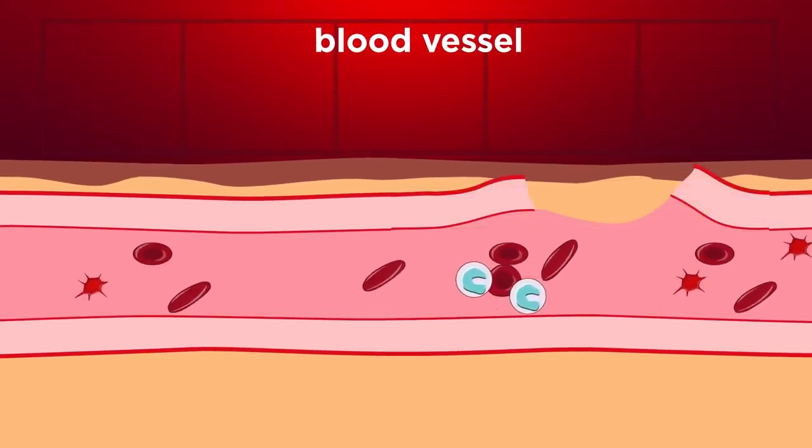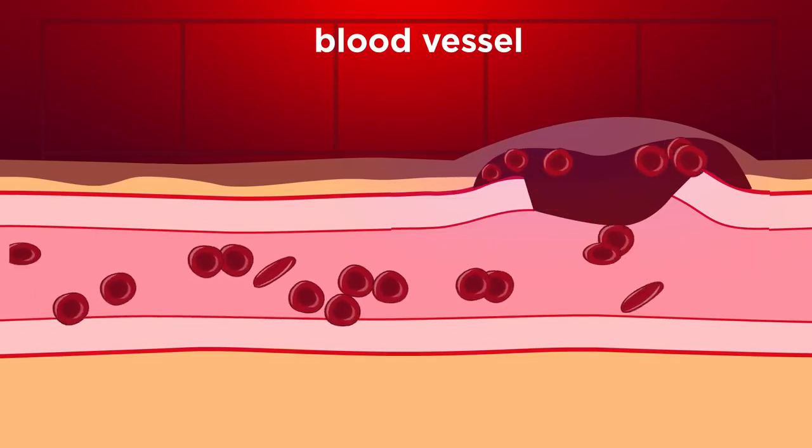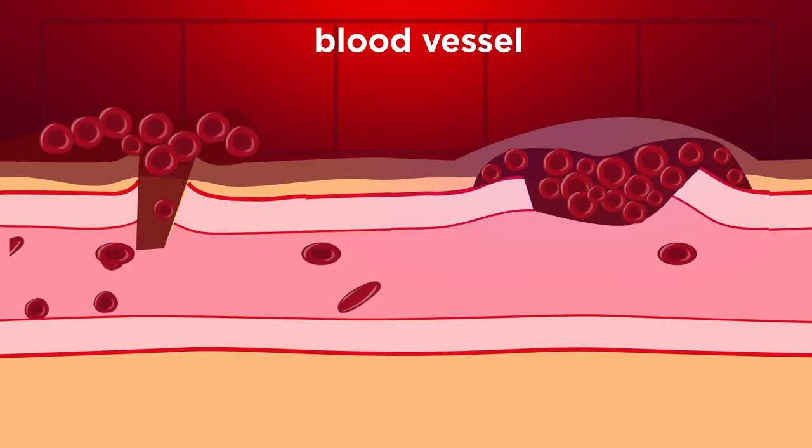When we injure ourselves, we can damage the blood vessels just below our skin. This can cause blood to either leak into our tissue and form a bruise, or if the skin is broken, to openly bleed.